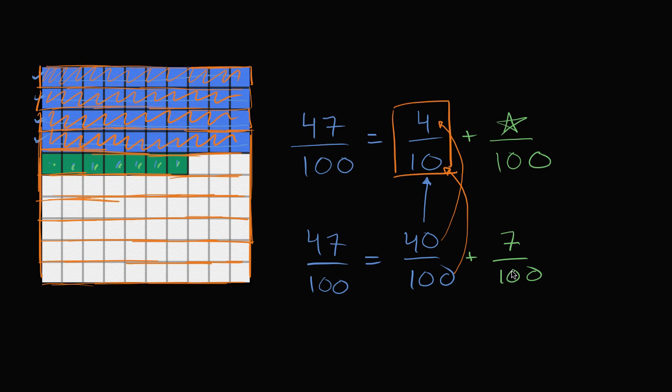But what's left over? Well we still have the 7 hundredths over here. So 40 hundredths plus 7 hundredths is the same thing as 4 tenths plus 7 hundredths.